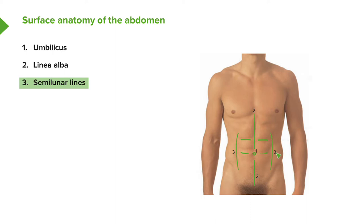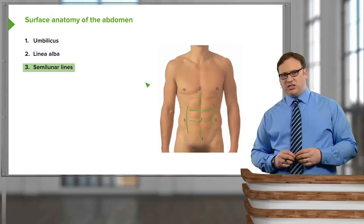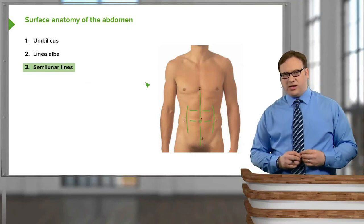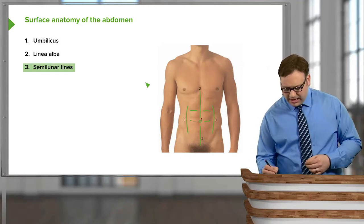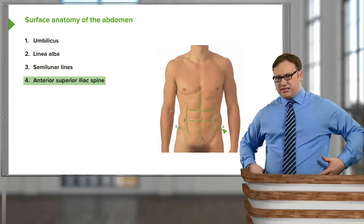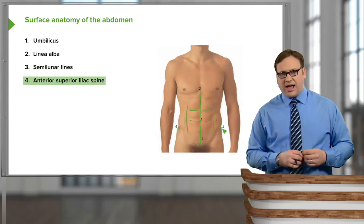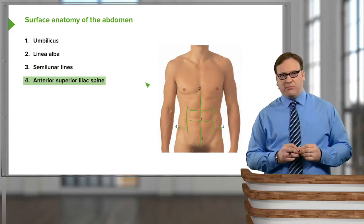These are known as our semi-lunar lines. So we have the linea alba in the midline, we have the umbilicus, and then lateral to it, we have a pair of semi-lunar lines. We can also see bony landmarks — a structure on either side of the body known as the anterior superior iliac spine, approximately here and here. These are the structures which you're supposed to hang your trousers on.